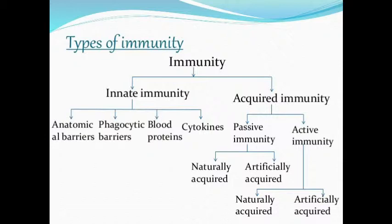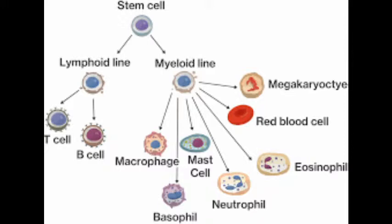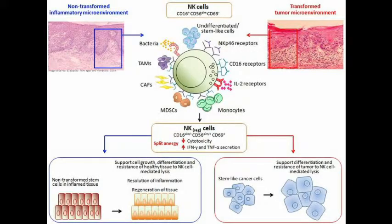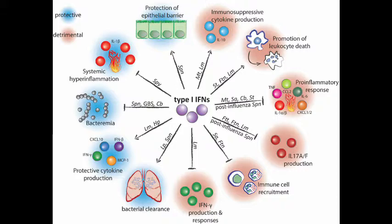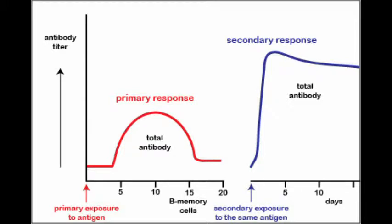Innate immunity is divided into: anatomical barriers (skin and mucosa), physiological barriers (fever, body pH, and secretions), cellular barriers — which consist of phagocytic cells (monocytes, neutrophils, and macrophages) and non-phagocytic cells (natural killer cells) — and cytokine barriers, which are proteins secreted for protection, for example interferons. Active immunity is provided by memory T cells, which keep track of antigens and provide a strong secondary response called the anamnestic response.